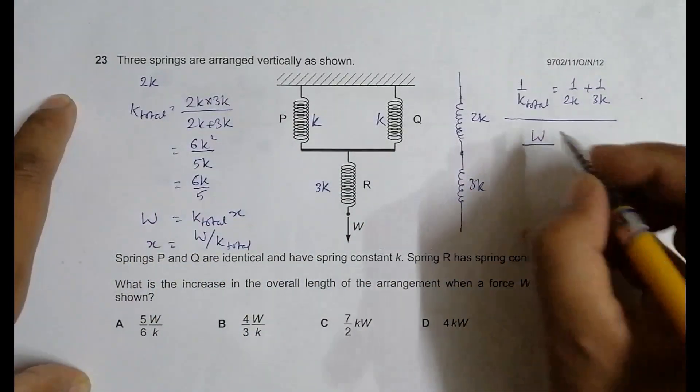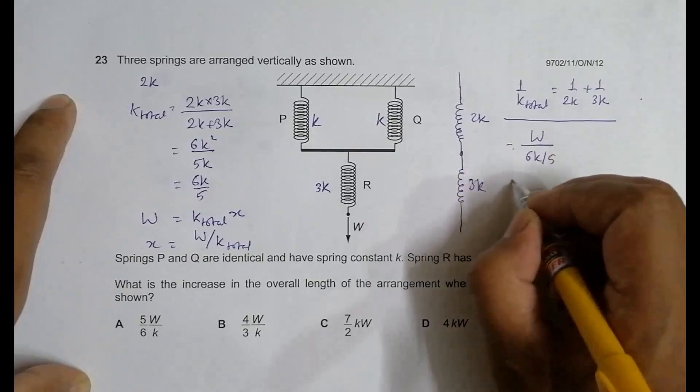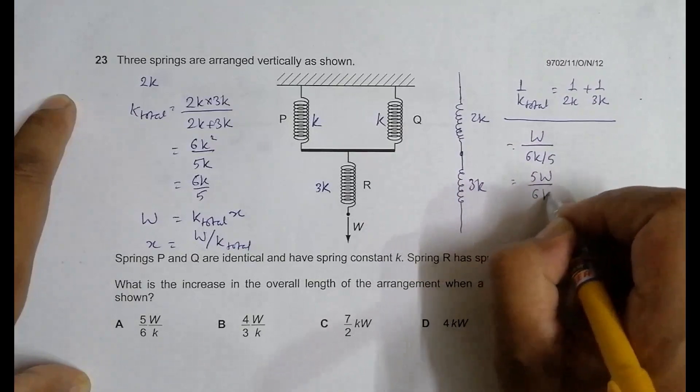W by K total is equal to W by 6K by 5, which equals 5W by 6K.